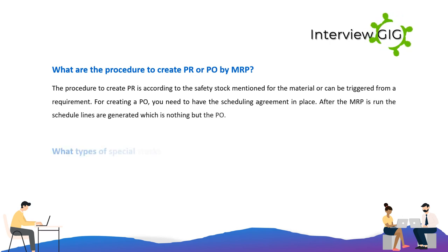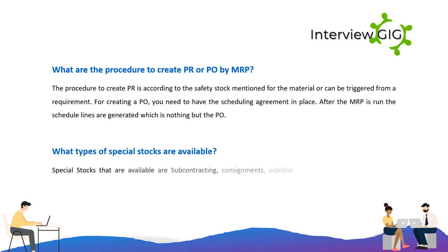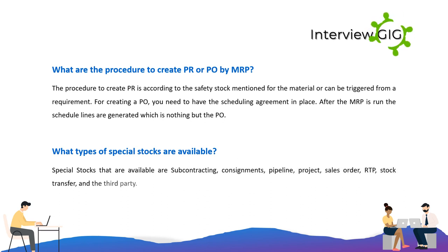What types of special stocks are available? Special stocks that are available are: subcontracting, consignments, pipeline, project, sales order, RDP, stock transfer, and third party.